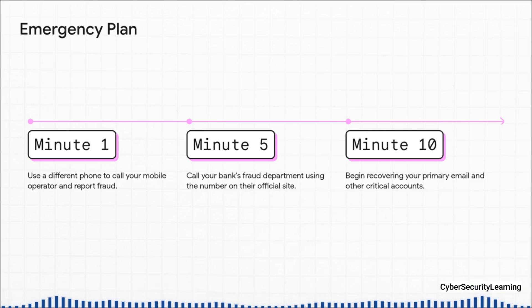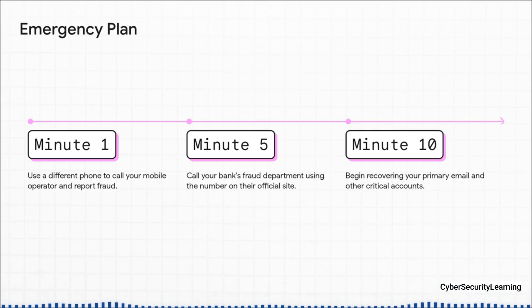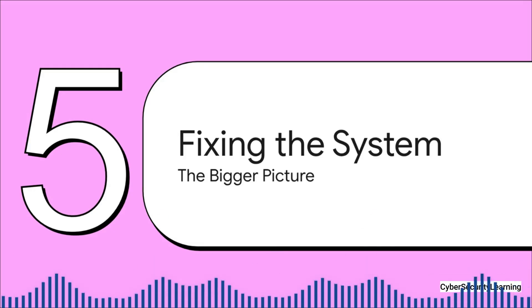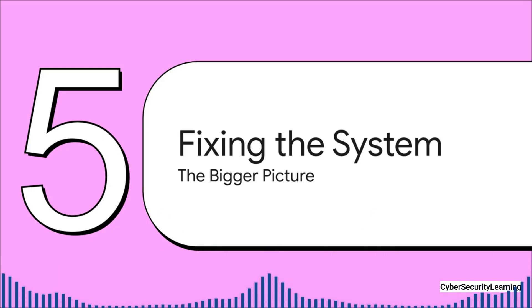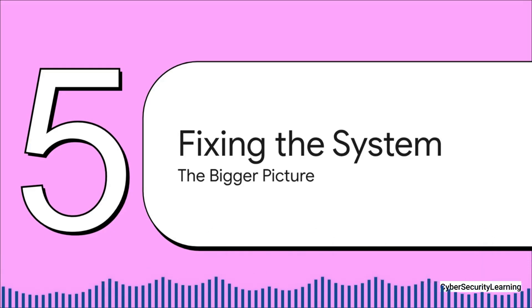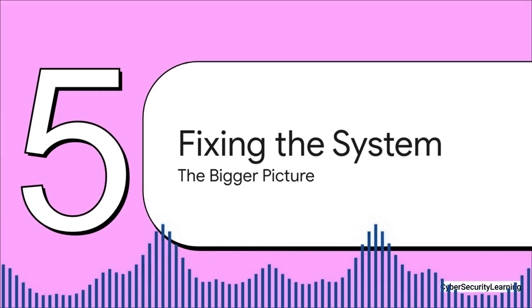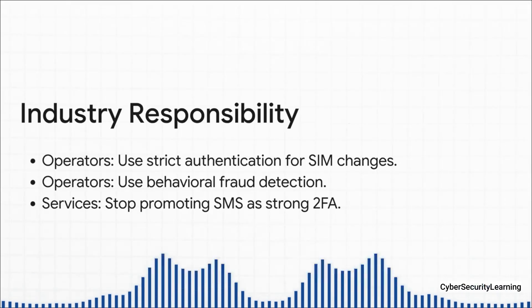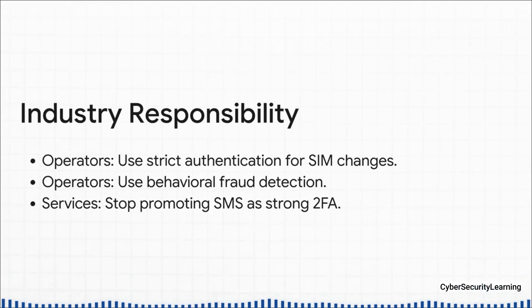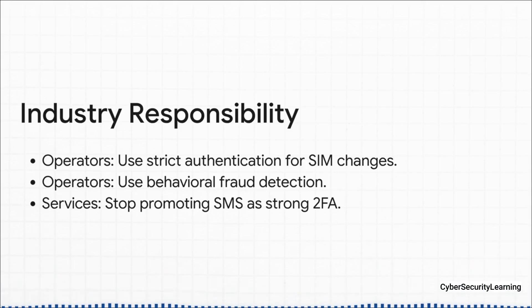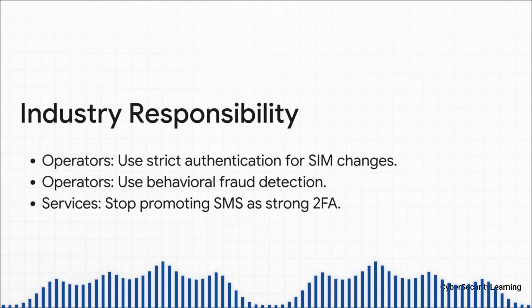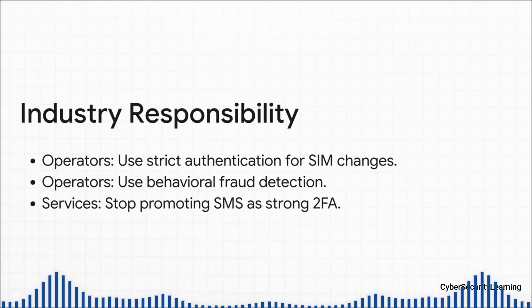Tell them to freeze everything. By minute 10, you need to be at a computer trying to get back into your main email account before the attacker locks you out for good. While all these personal defense steps are critical, we shouldn't have to do all this work by ourselves. The carriers should treat a request to change a SIM card with the same seriousness as a bank treats a wire transfer — they need much stricter authentication and modern fraud detection. Shouldn't a system flag it when an account that's been in California for 10 years suddenly tries to swap a SIM from another country at 3am?